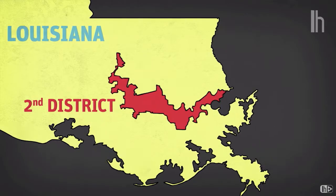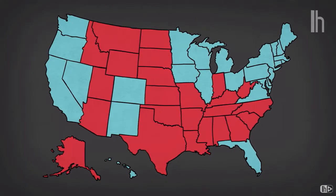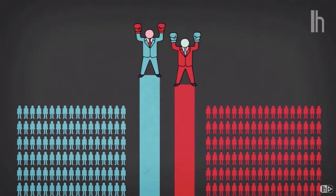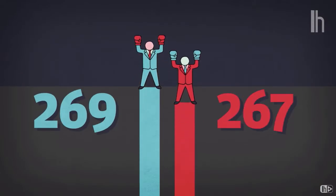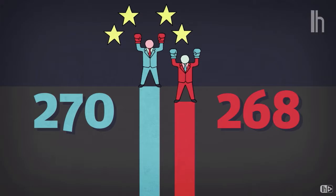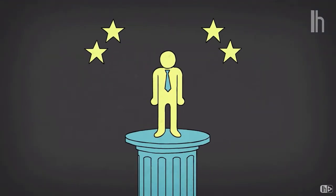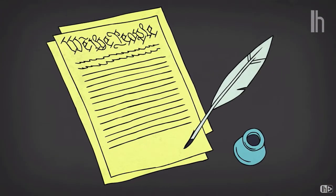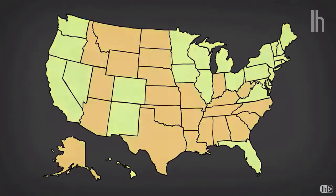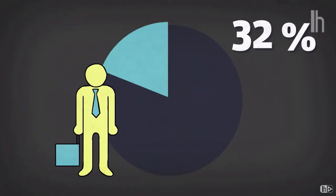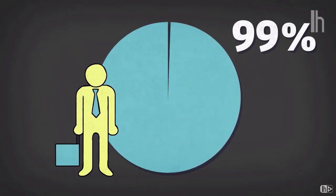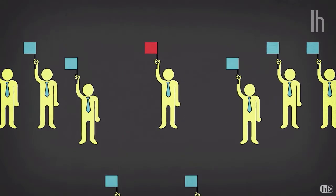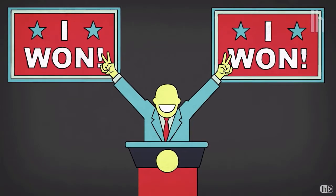Some argue this district-based system better represents the population's vote — though many states' districts have been mangled through gerrymandering, which are political campaigns to rearrange legislative districts to reliably vote one way. Once all the votes are in and electors from each state are determined, those electors vote for their pledged candidate. A majority of 270 electoral votes is required. There is no constitutional provision requiring electors to vote as pledged, but more than 99% of electors historically have voted as pledged.